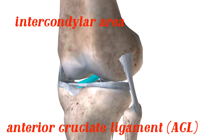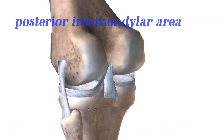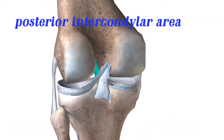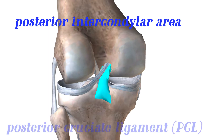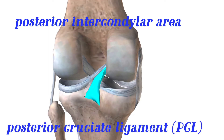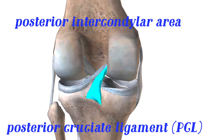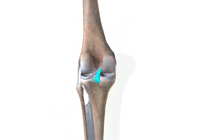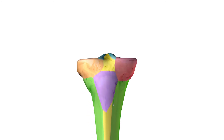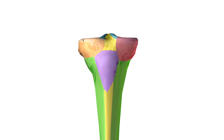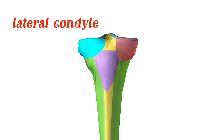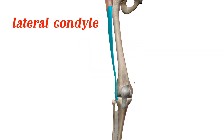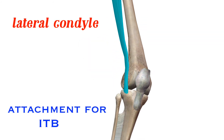If I turn this around to the posterior side, take a wild guess what connection point that's going to be — that's the attachment point for your PCL, your posterior cruciate ligament. On the anterior side, we have the lateral condyle, which has an attachment to your iliotibial band, your IT band. I do have videos on these ligaments and tendons, so go ahead and watch those.